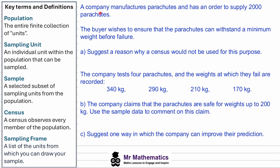For our final example, a company manufactures parachutes and has an order to supply 2000. The buyer wishes to ensure that the parachutes can withstand a minimum weight before failure. For part A, suggest a reason why a census would not be used for this purpose.